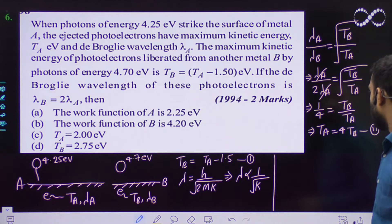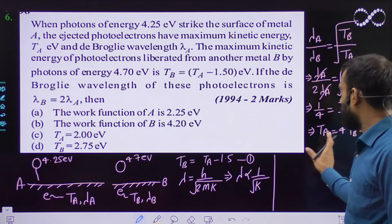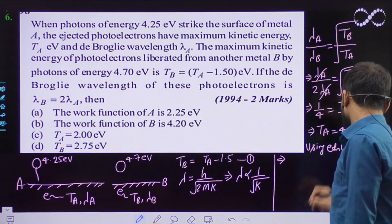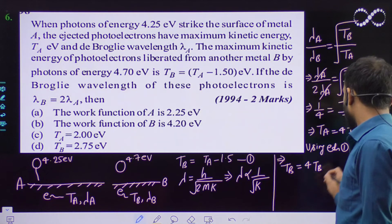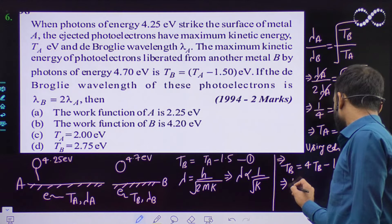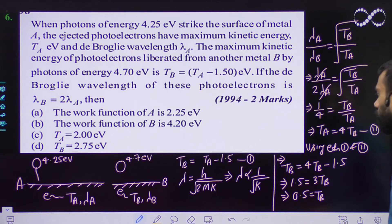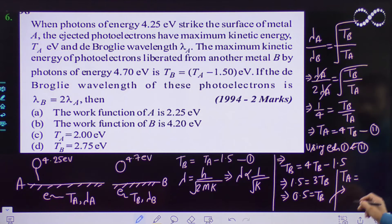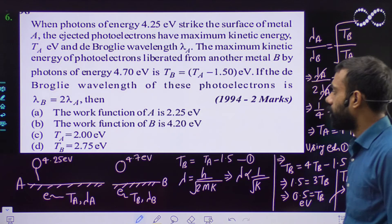So I have two equations — equation 1 and equation 2 — and from these I can get the values of T_A and T_B. Using equation 2 in equation 1: T_B = 4T_B - 1.5, so 1.5 = 3T_B, giving T_B = 0.5 electron volt. Then T_A = 4 × 0.5 = 2 electron volt.